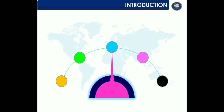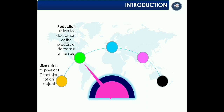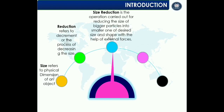To discuss this point, we need to discuss various concepts. Before starting the actual concept, I want to explain what is size and what is reduction. Size refers to the physical dimension of an object, whereas reduction refers to the decrement or the process of decreasing the size. Size reduction is the operation carried out for reducing the size of bigger particles into smaller ones of desired size and shape with the help of external forces.